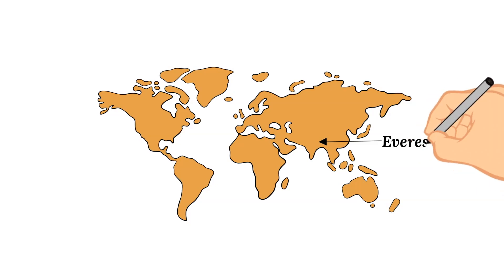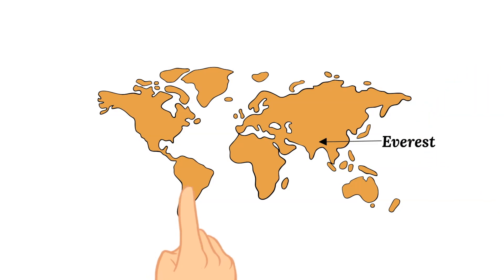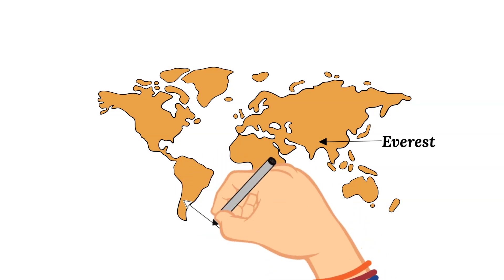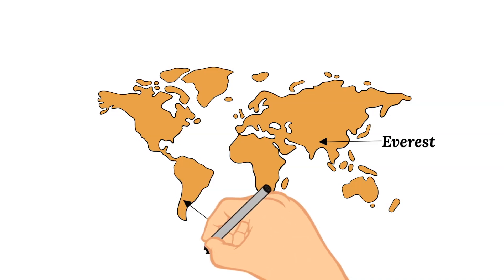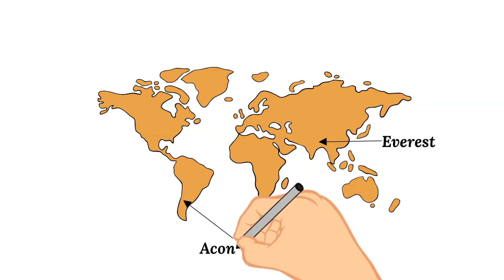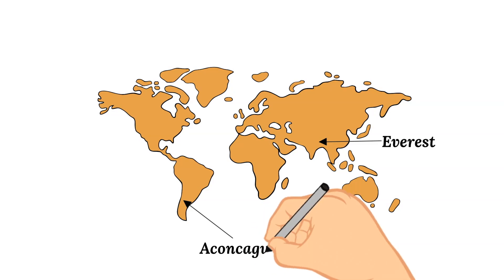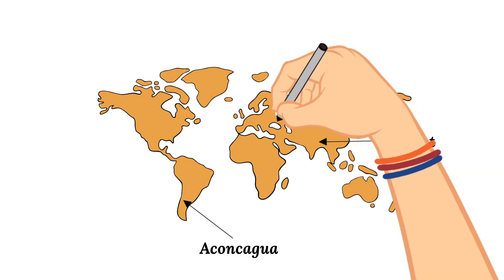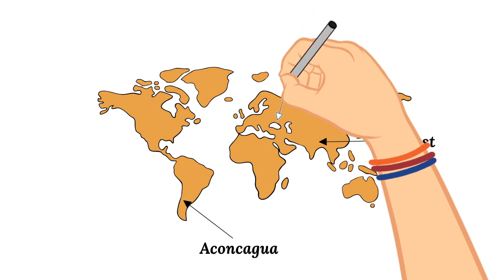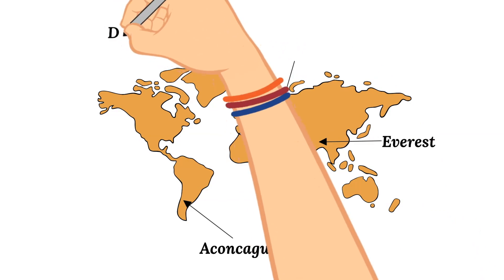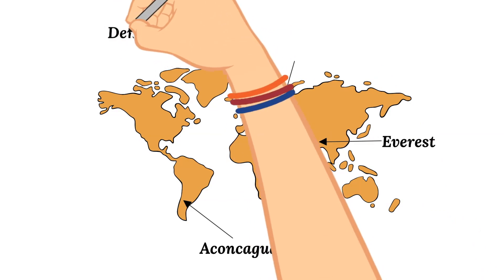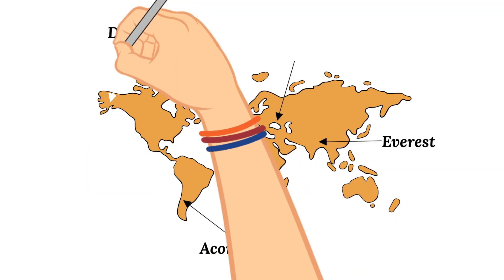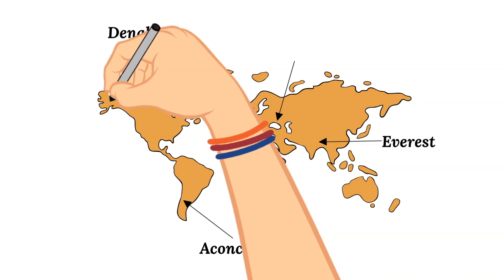Next up is Aconcagua. This mountain is found in South America and is near the border between Argentina and Chile. This mountain is 22,841 feet high. Next is Denali, located in North America — specifically in Alaska — and this mountain reaches 20,321 feet.